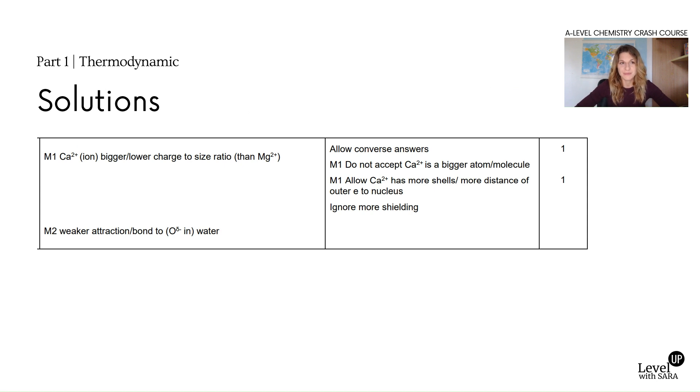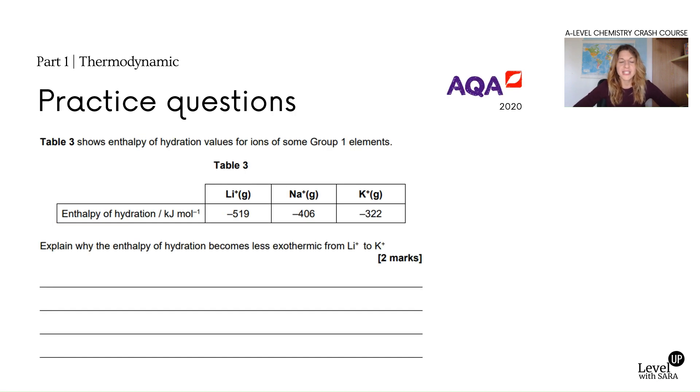Calcium is bigger or it's a lower charge to size ratio, charge density, so weaker attraction to the dipole in water. Here is another example. If you want to give it a go yourself, stop, and then when you're ready with your answer, play again because I will show you the marking scheme soon.